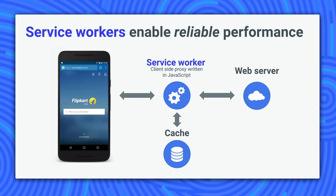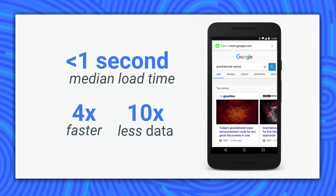Service workers enable you to implement caching with the Cache API — not just by hoping to rely on browser caching. This means that after the first visit, sites and apps can be reliably fast.